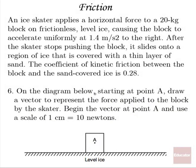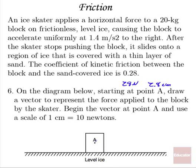Same problem: on the diagram, draw a vector to represent the force applied to the block by the skater, beginning at point A, using the scale of 1 centimeter equals 10 newtons. Since we need to represent 28 newtons, that's 2.8 centimeters. So we start at A and draw our vector 2.8 centimeters to the right. That represents our applied force.